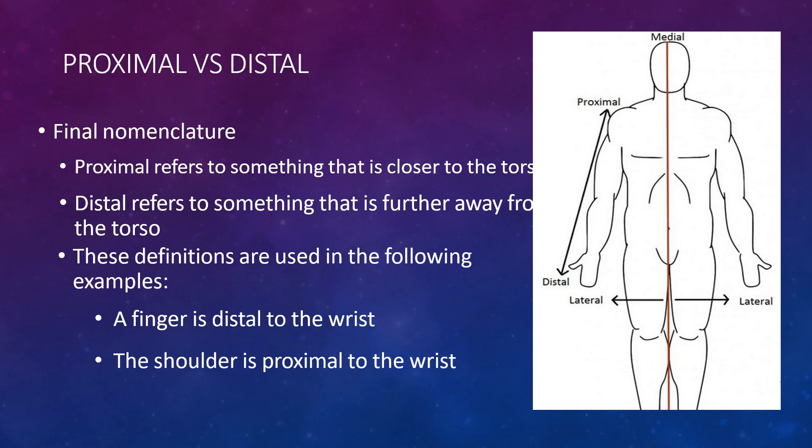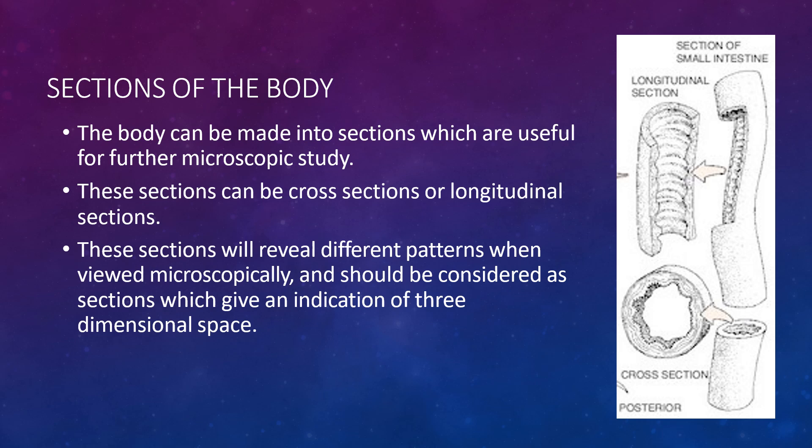The final nomenclature is proximal versus distal. Proximal refers to something that is closer to the torso, while distal refers to something that is further away from the torso. For example, a finger is distal to the wrist, and the shoulder is proximal to the wrist.